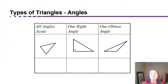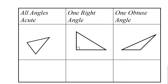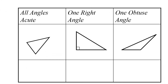Triangles can be categorized in a couple of different ways. One way is by the sizes of their angles. If a triangle has all acute angles — recall, we previously discussed that acute means between zero and 90 degrees, so small — if a triangle has all acute angles, guess what it's called? That's right, an acute triangle.